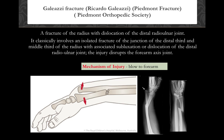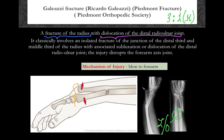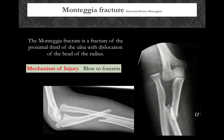The Galeazzi fracture is three times more common than its counterpart, Monteggia. Galeazzi fracture consists of four parts: number one, fracture of the lower part of the radius; number two, dislocation of the distal radio-ulnar joint; number three, damage to the interosseous membrane; number four, damage to the triangular fibrocartilage complex at the wrist joint. This was asked in AIIMS May 2017, where all four components had to be marked together.